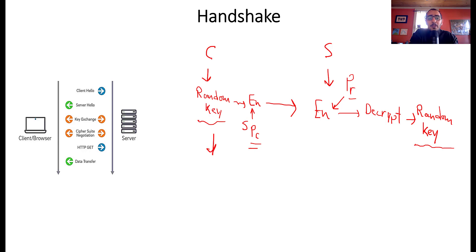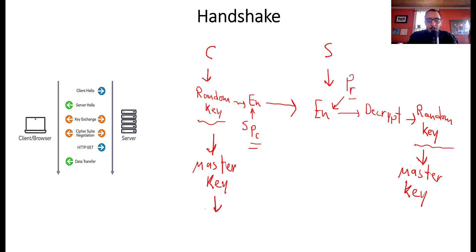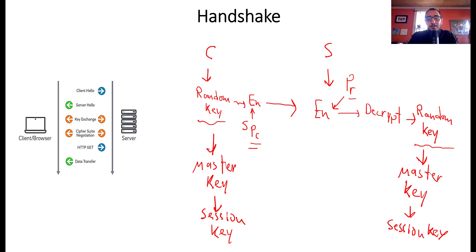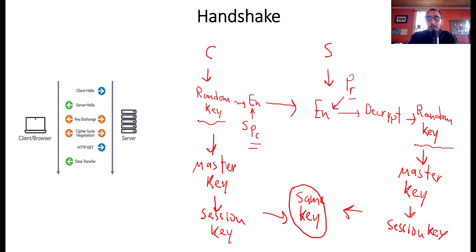Both sides then use the random key in calculations to derive a master key, and then a session key. Both client and server arrive at the same session key. This key is then used for encryption and decryption on both sides using the same key — which is symmetric encryption.